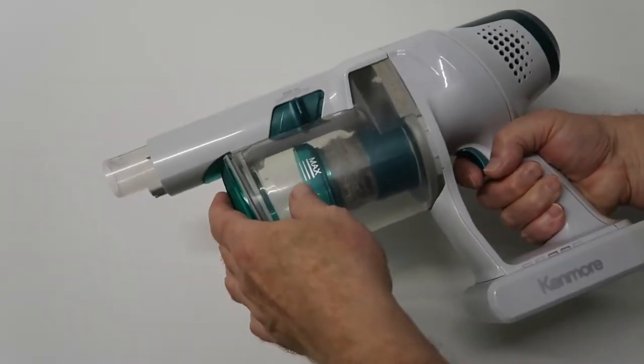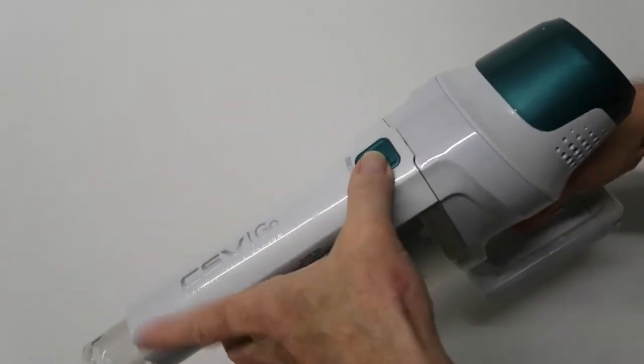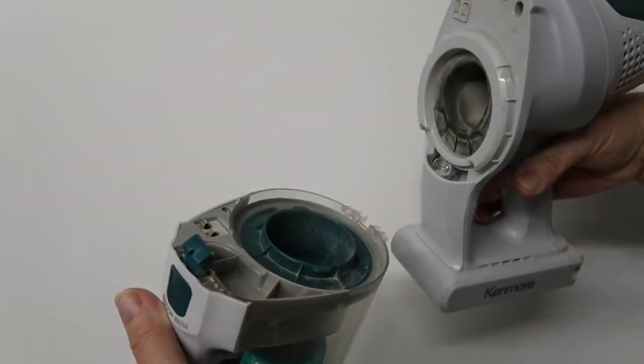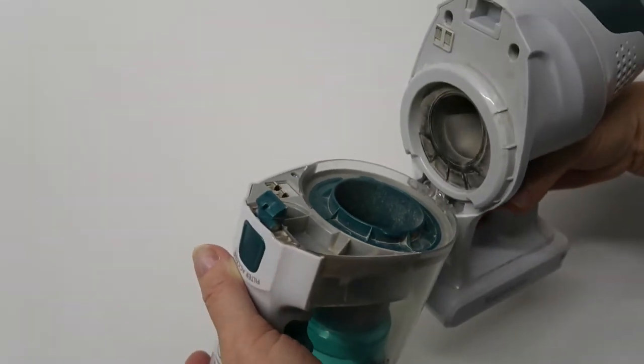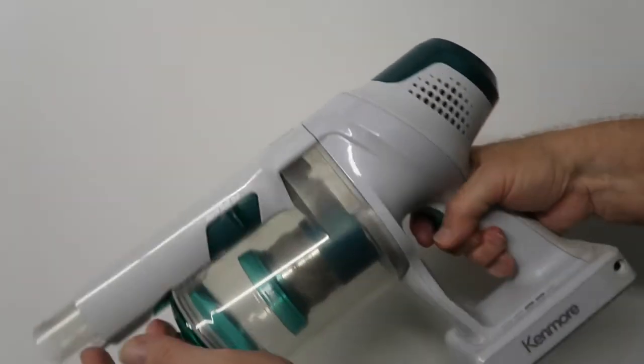So next up, we're going to separate this housing from the motor, and to do that, you push that button, and it hinges at the bottom. So after we're done cleaning this, we're going to stick those two pins back in, and then it'll snap together.